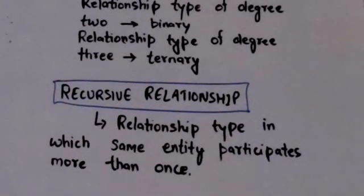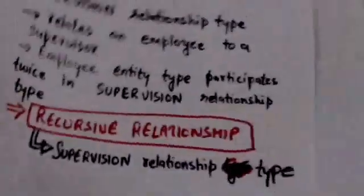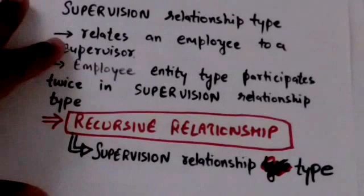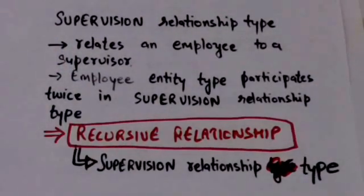A relationship type in which the same entity participates more than once is called a recursive relationship. For example, consider the supervision relationship type which relates an employee to a supervisor, where both employee and supervisor entities are members of the employee entity set. So employee entity type participates twice in supervision relationship type. Therefore, supervision relationship type is a recursive relationship.